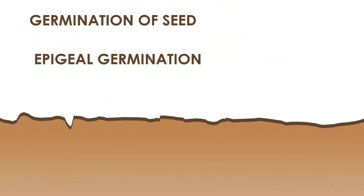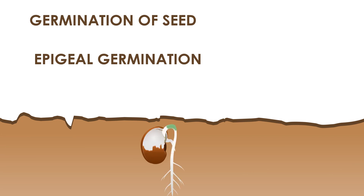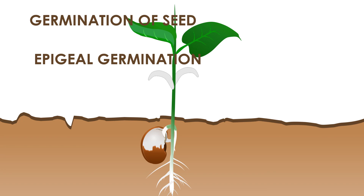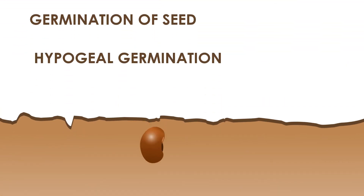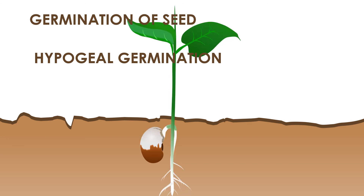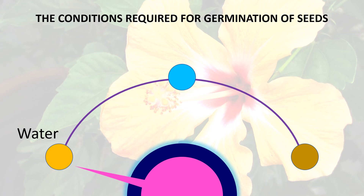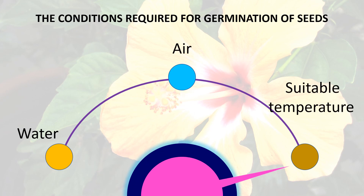There are two types of germination of seeds. In epigeal germination, the cotyledons are carried out of the soil. In hypogeal germination, the cotyledons remain in the soil during germination. The conditions required for germination of seeds are water, air, and suitable temperature.